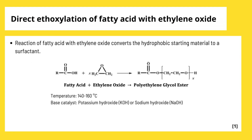Reaction of fatty acid with ethylene oxide converts the hydrophobic starting material to a surfactant. The reaction is run at 140 to 180 degrees Celsius under an inert atmosphere using a base catalyst, where potassium hydroxide is most commonly used. The direct ethoxylation of fatty acids typically shows an induction period during which the reaction rate is relatively slow. The initial reaction produces primarily ethylene glycol monoester. After about one mole of ethylene oxide is added, the reaction rate increases, and the polyethylene glycol and diester content in the product increases.